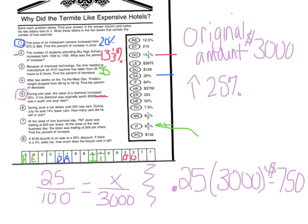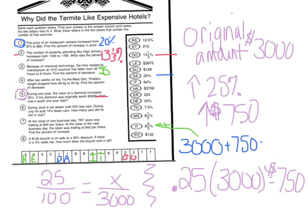So that tells us it went up $750. Originally it was $3,000, it went up $750, so I just add those together to figure out how much it was worth the next year: 3,000 plus 750 equals $3,750. That shows up as HA for number 5. Hopefully this will get you started. If you're still stuck, bring them in and we'll talk tomorrow. Have a good night — see you then!